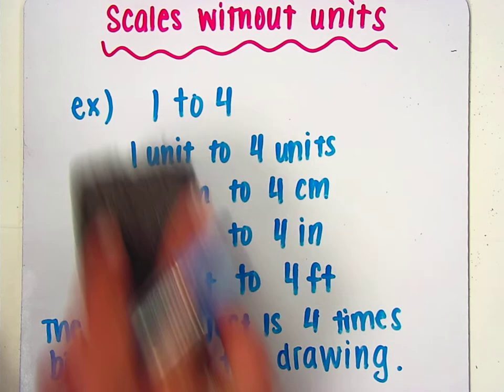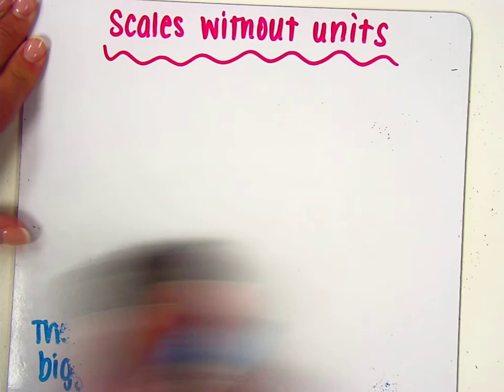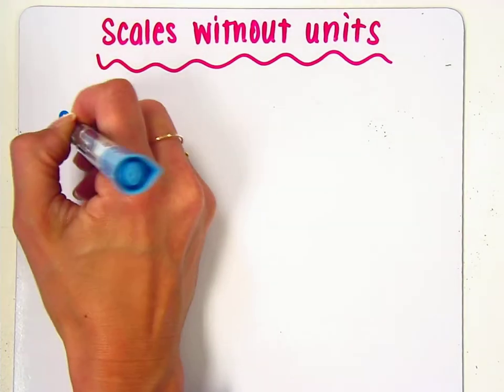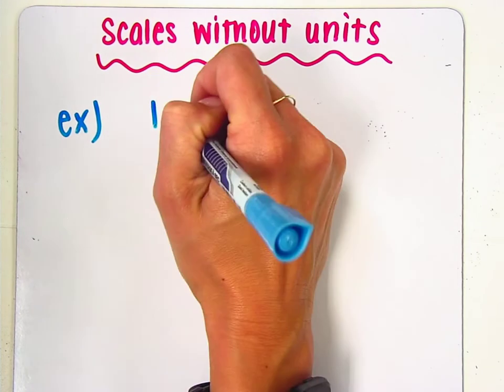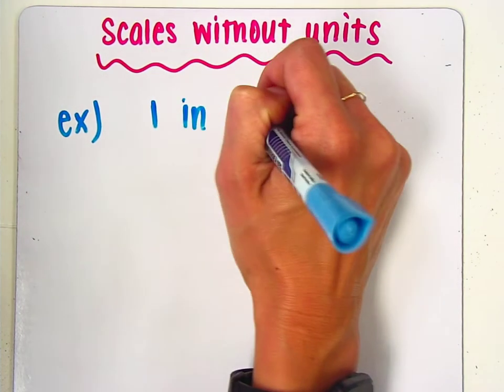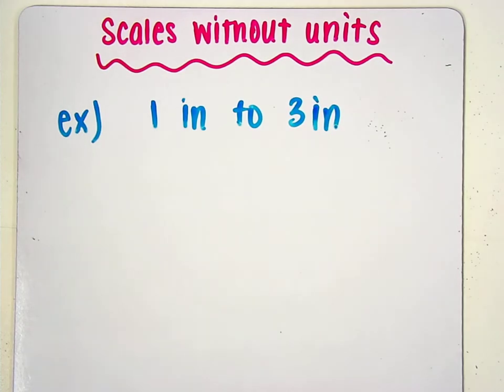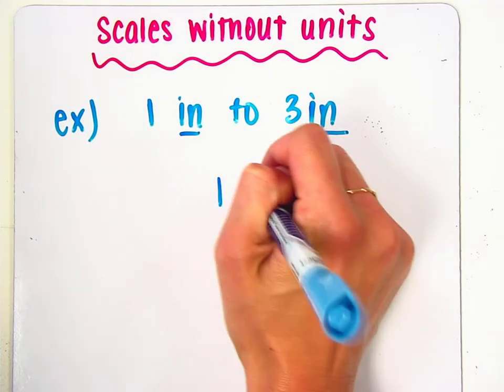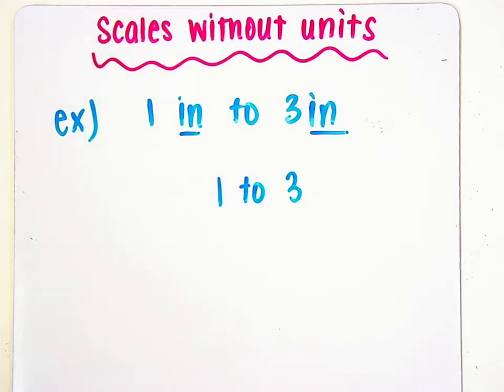So now how can we write scales without units? The first example we're going to look at is let's say we're given the scale one inch to three inches. Again, we remember that scales without units are scales that have the same units. So because these already have the same units, we can simply drop those units and write our scale as one to three.